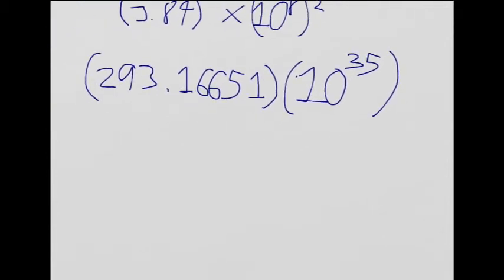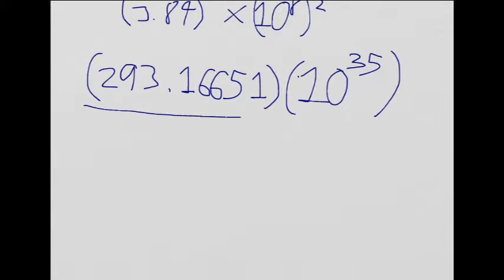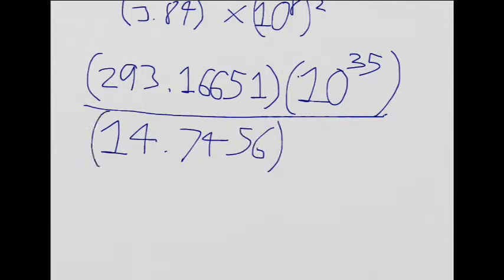And let's take care of the bottom. 3.84 squared is 14.7456, and 8 squared is 10 to the 16th.